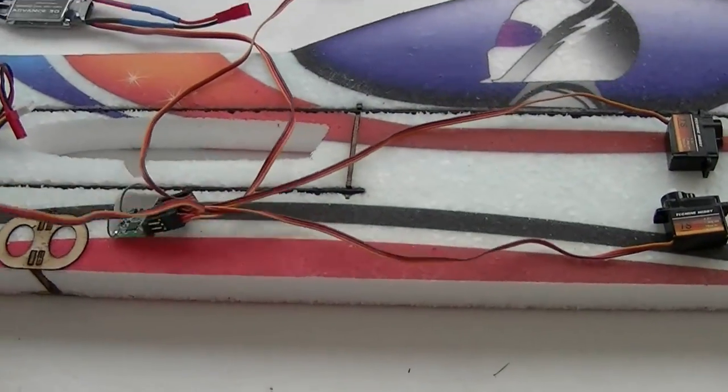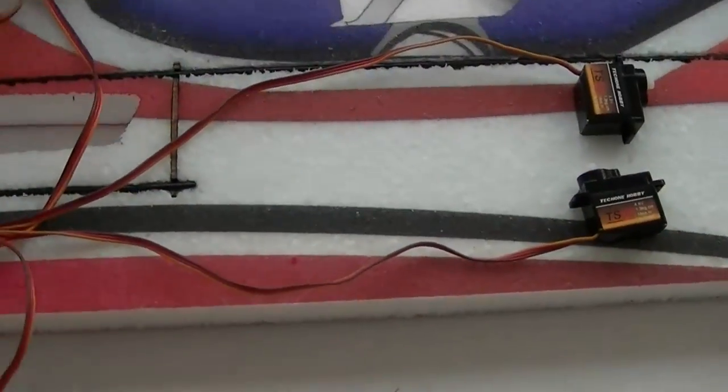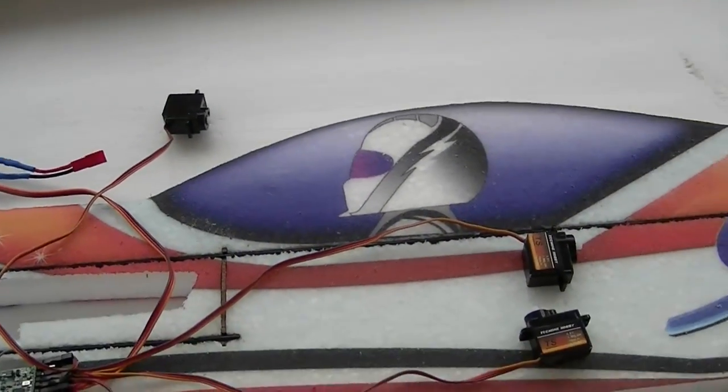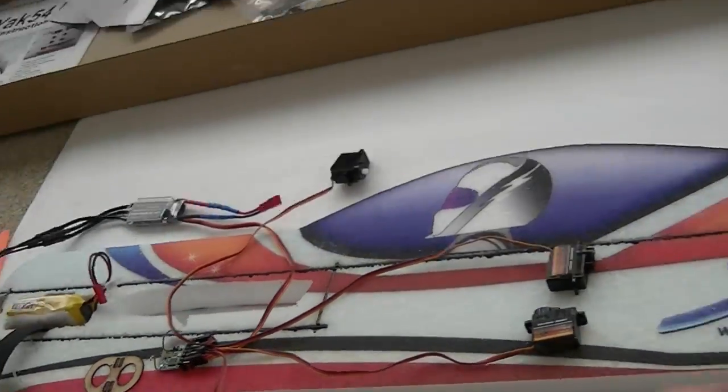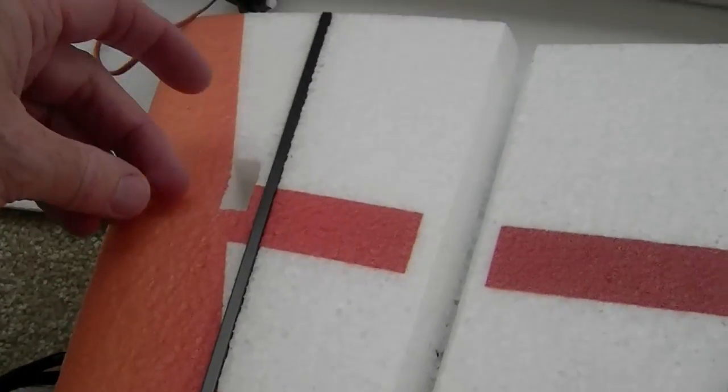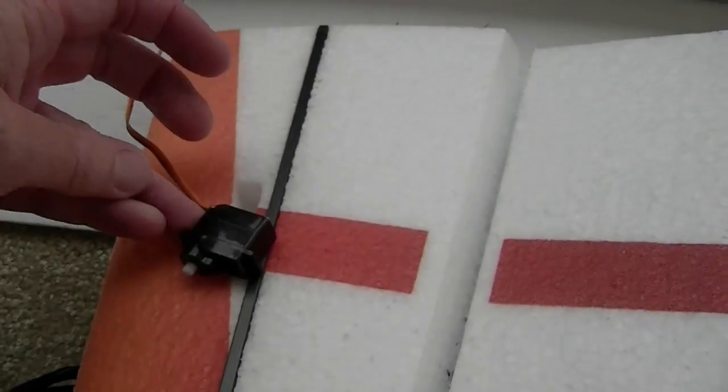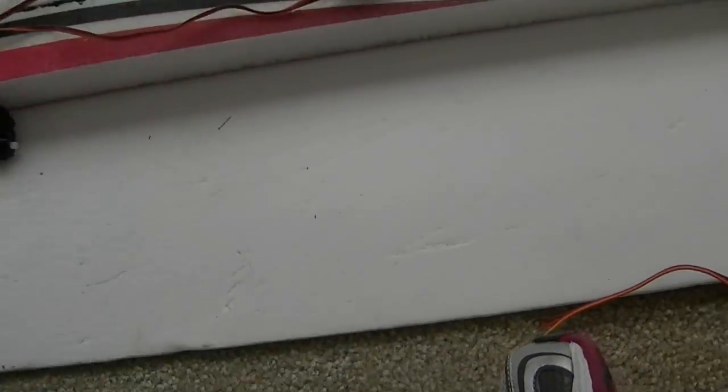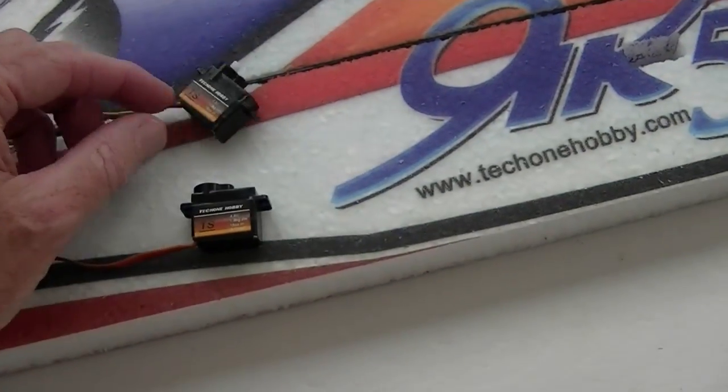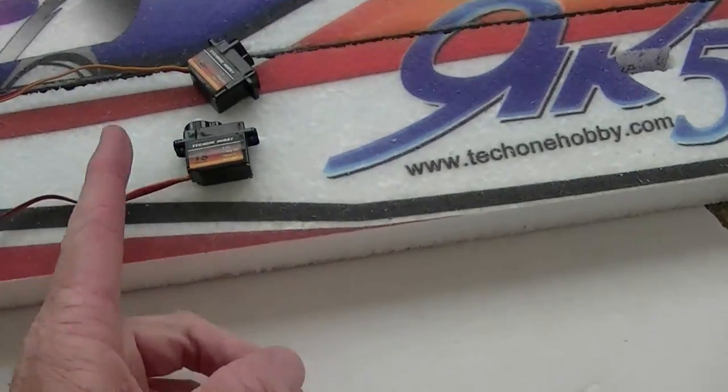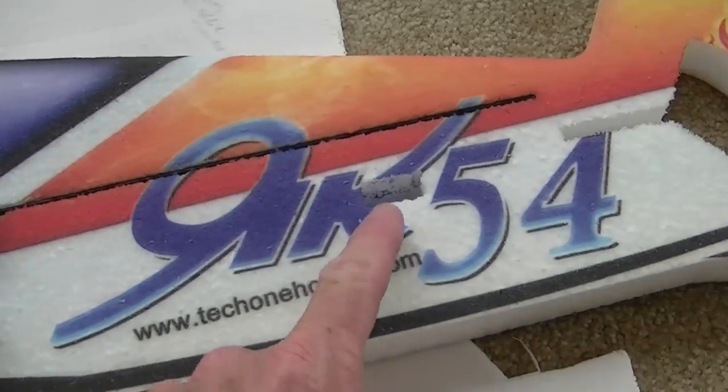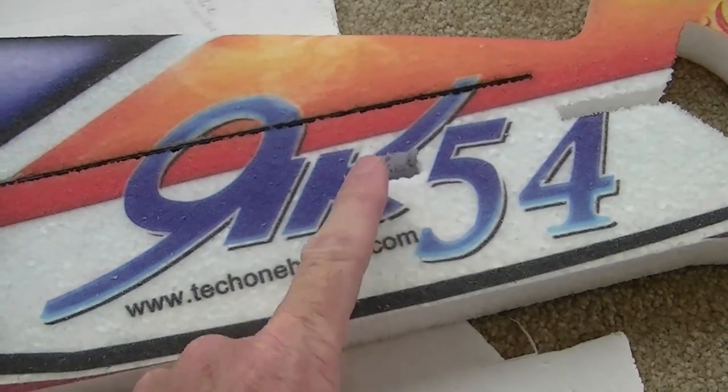These are the two aileron servos. They should go on the wings which have a pre-cut hole right here. It looks like the wire will be plenty long enough, no problems, don't need an extension at all.